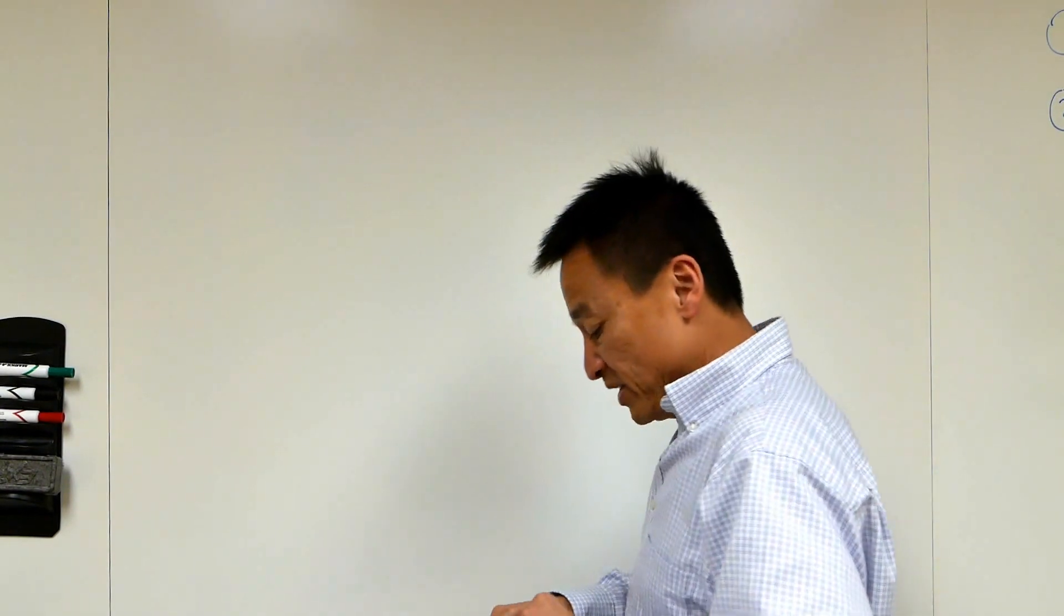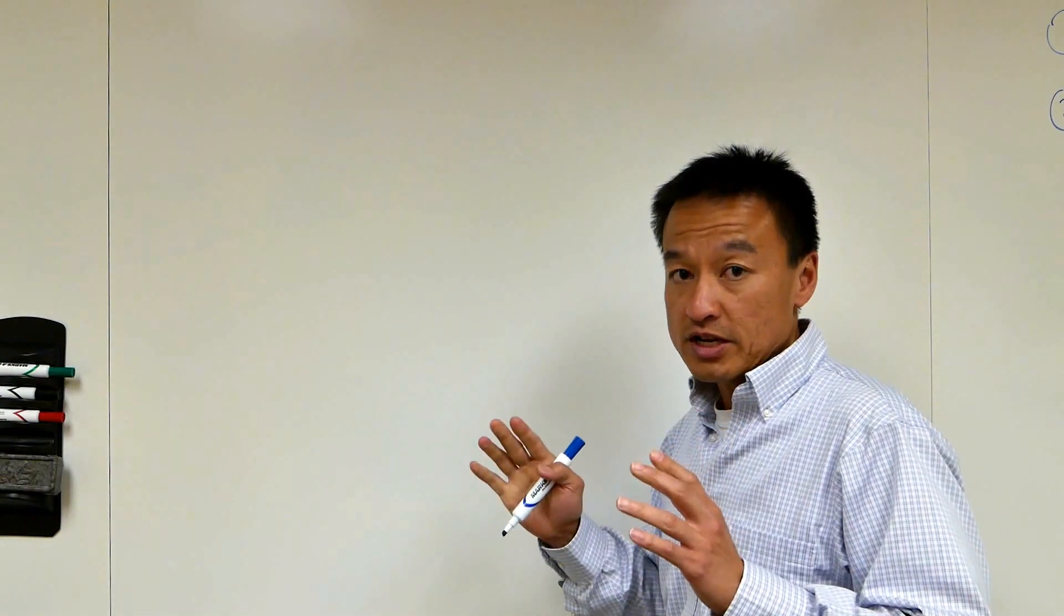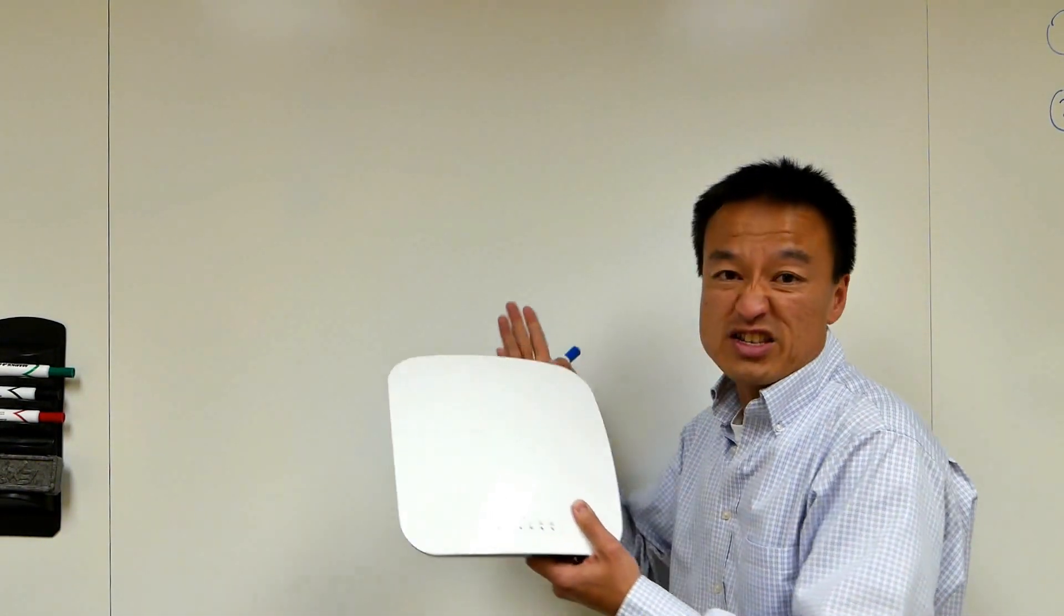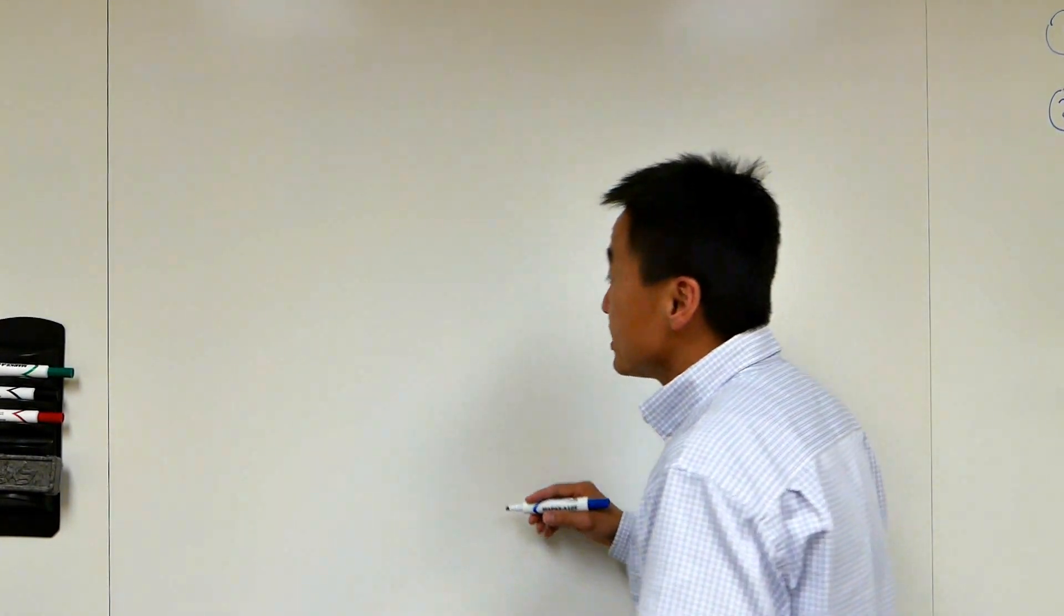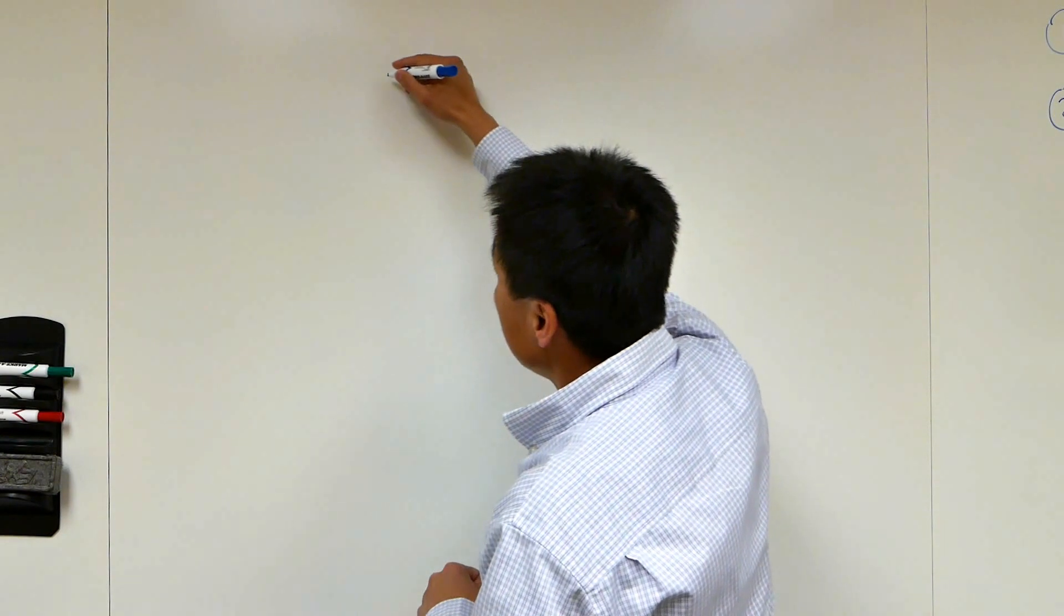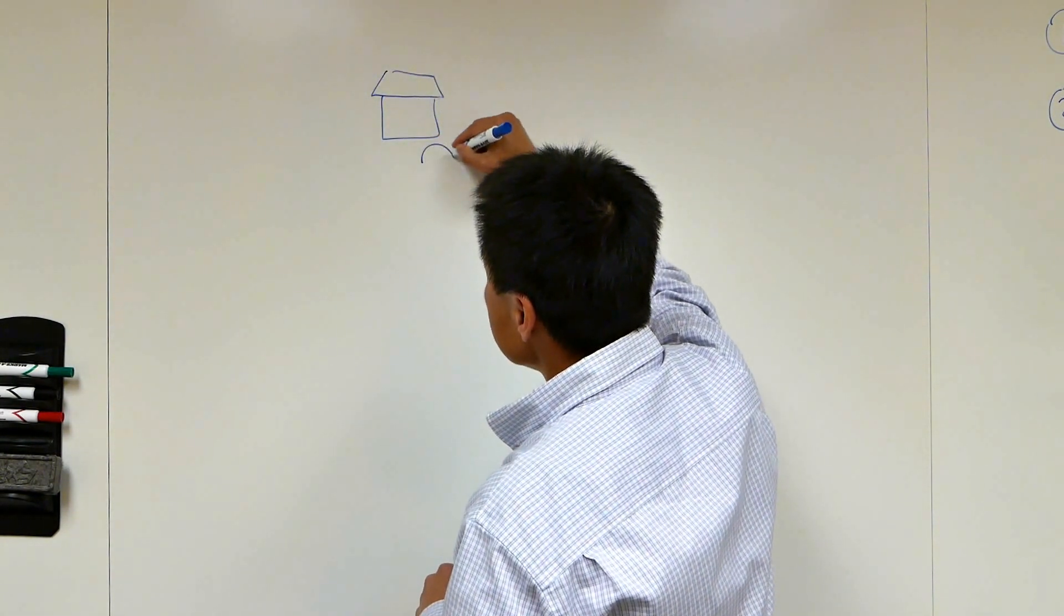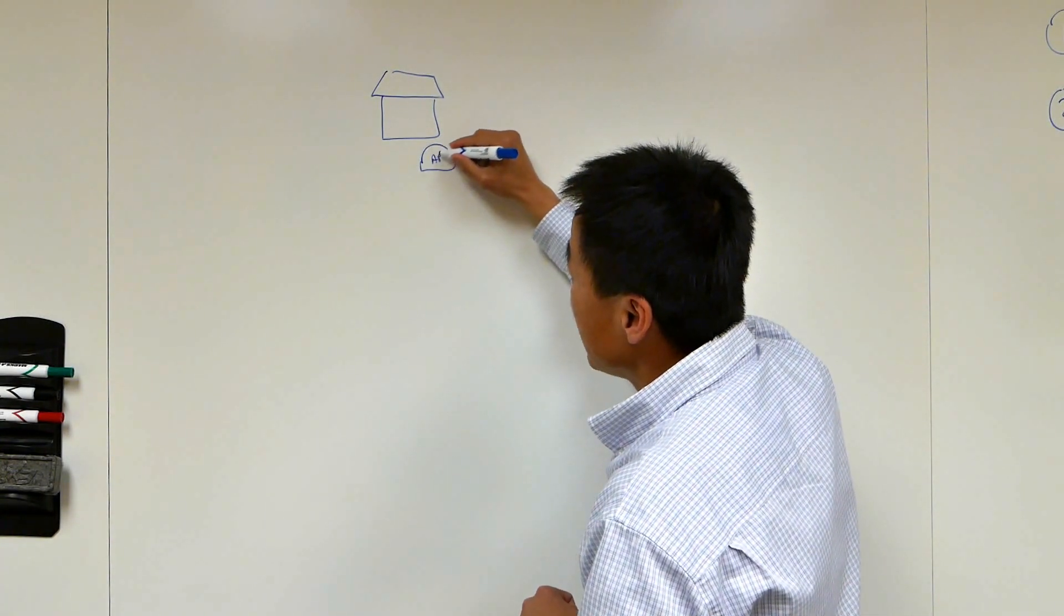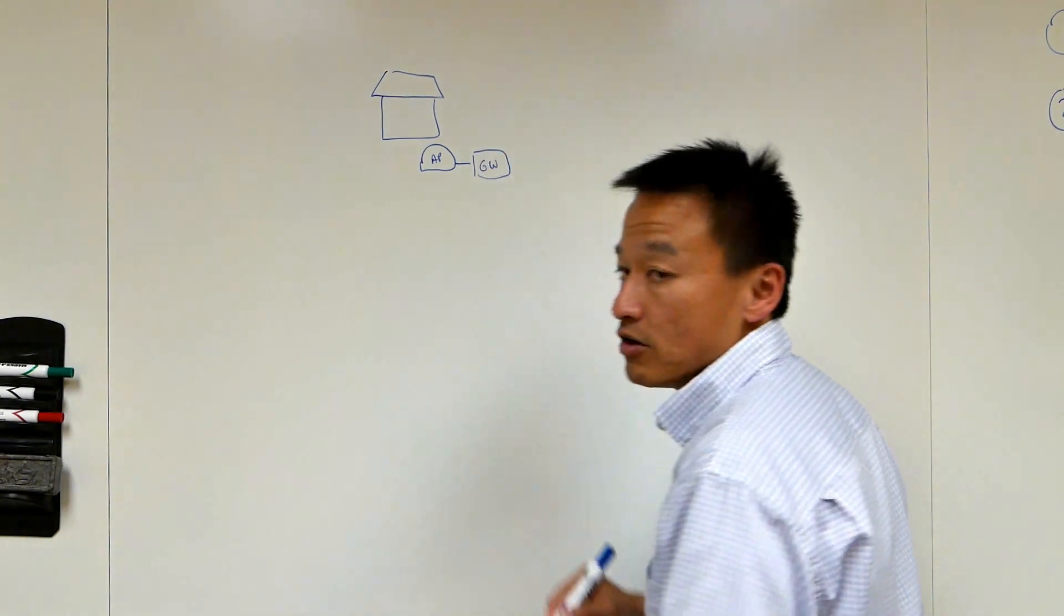So first thing you do, Business Central is a wireless cloud management solution. Typically what people have to do is you buy an access point through traditional channel partners and what you do is, let's say you buy an access point you want to deploy in your home. You take that access point, there you go, I'm going to put an AP here. You connect the access point behind any traditional gateway that you have at home.